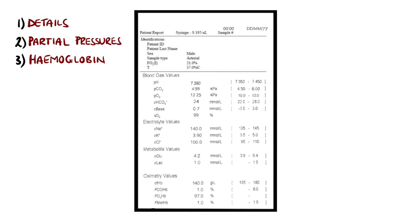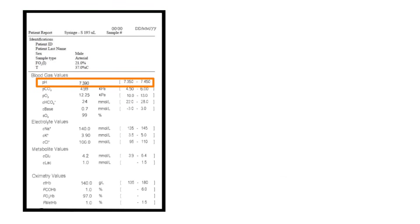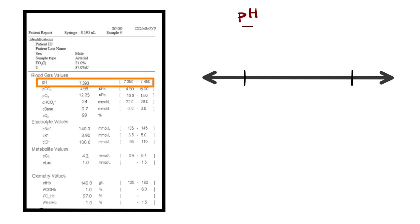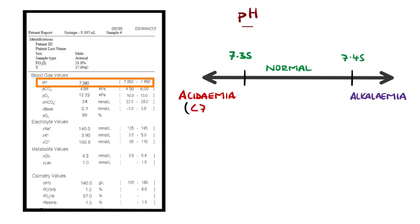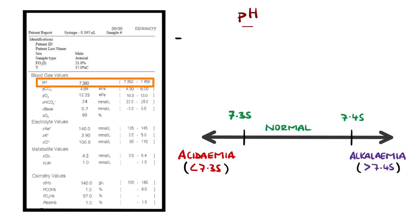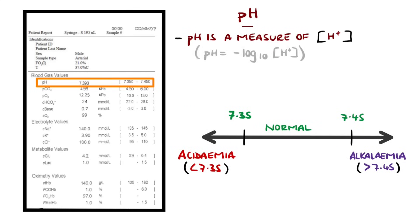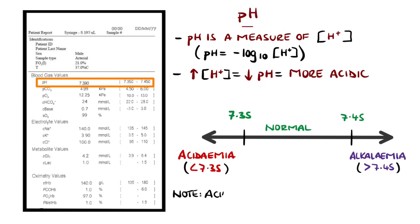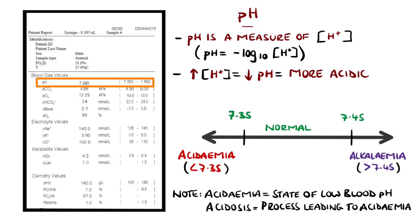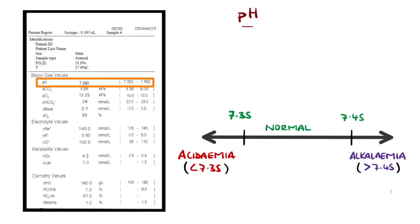Next is the pH, which should normally be between 7.35 and 7.45. This is based on the concentration of hydrogen ions in a solution, with higher concentrations of hydrogen ions giving a lower pH, indicating a more acidic environment, and vice versa. pH values below 7.35 indicate acidaemia, while values above 7.45 indicate alkalaemia. In general, abnormalities in the pH are divided into acidosis or alkalosis, and respiratory or metabolic.